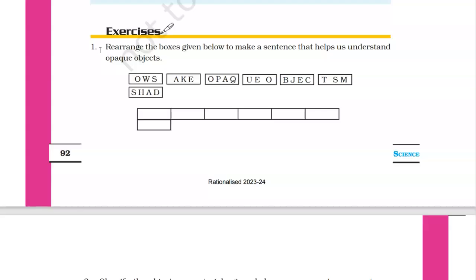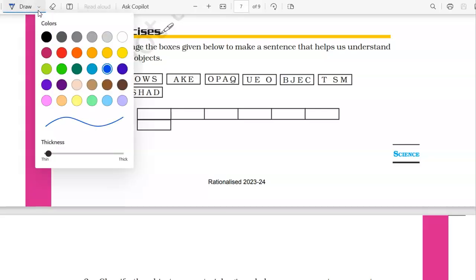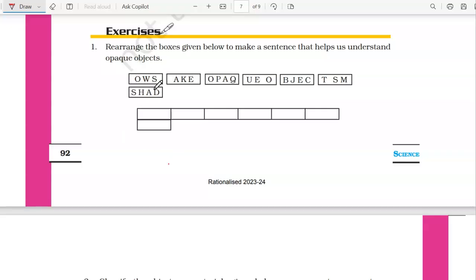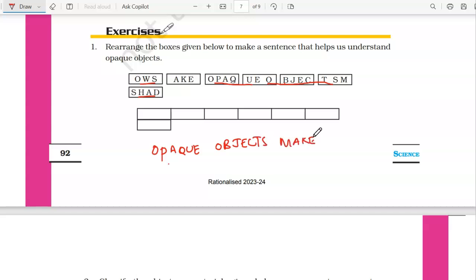If you have understood the chapter, you already know what opaque objects are. Looking at the given words — opaque, objects, shadows, make — we can form the sentence: opaque objects make shadows. I am writing it here; you can fill it in the blanks. Shadows are formed by opaque objects.